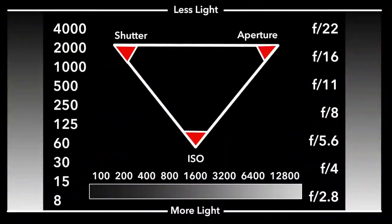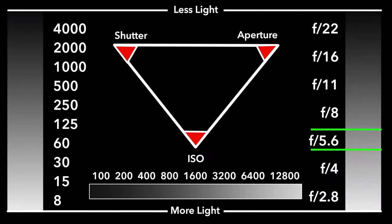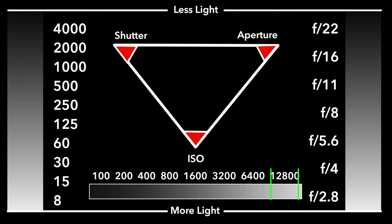To really make this make sense, I've got an animation and I'm going to explain all of this to you. Remember a stop just means twice as much light or half as much light. So let's bring back our animation, our exposure triangle. We have our shutter, our aperture, and our ISO. Remember our shutter has different shutter speeds that let in more and less light depending on the speed. We have our aperture value that lets in more or less light depending on the opening or the aperture value. And we have our ISO that gives us a sensitivity — so essentially more or less light depending on our ISO value.